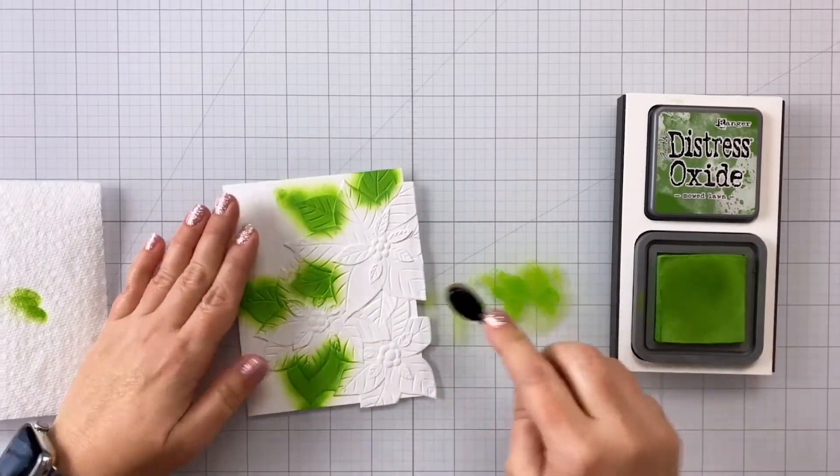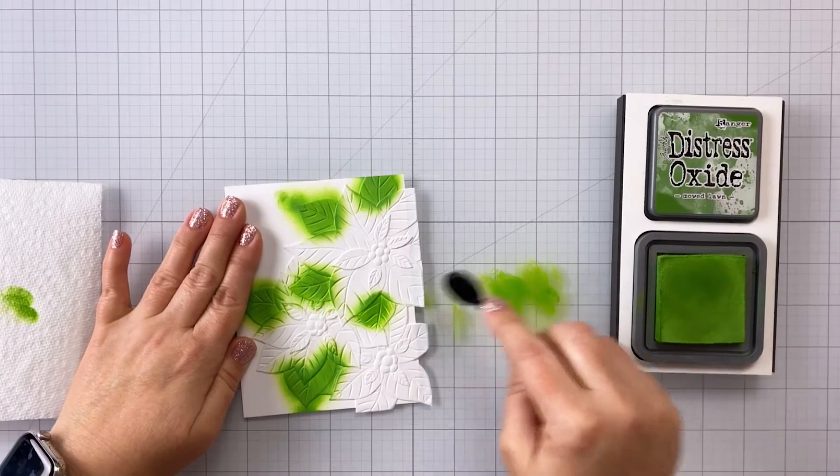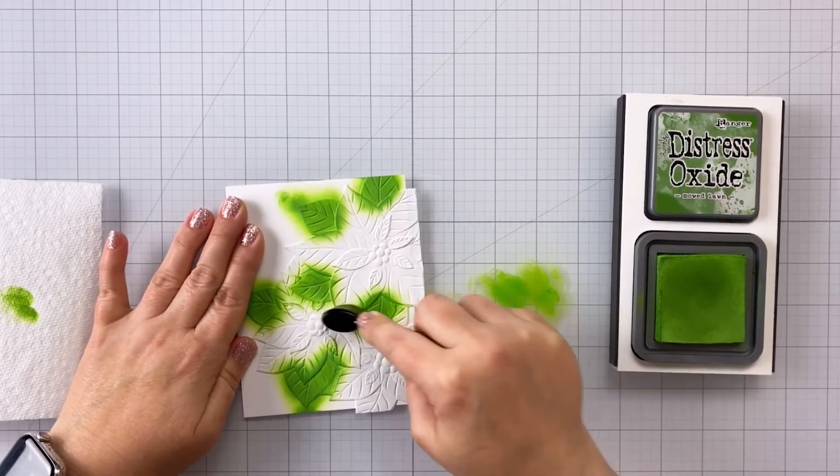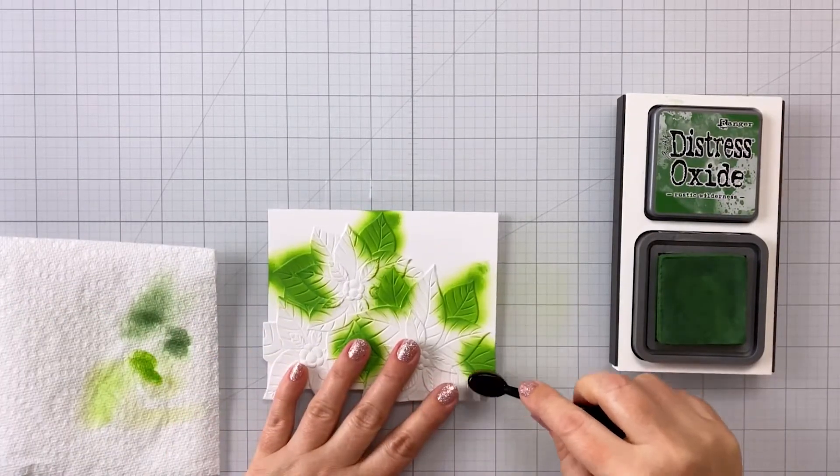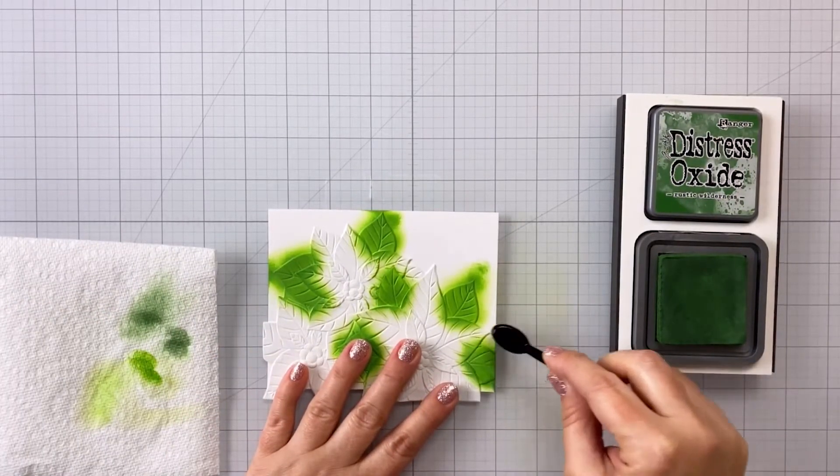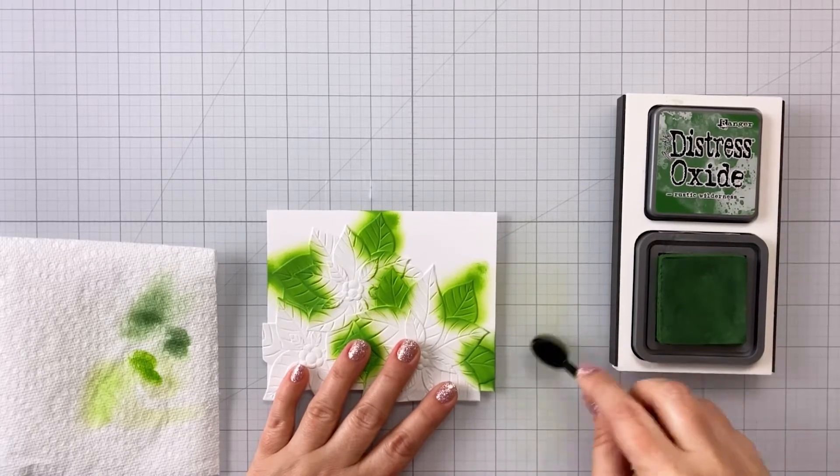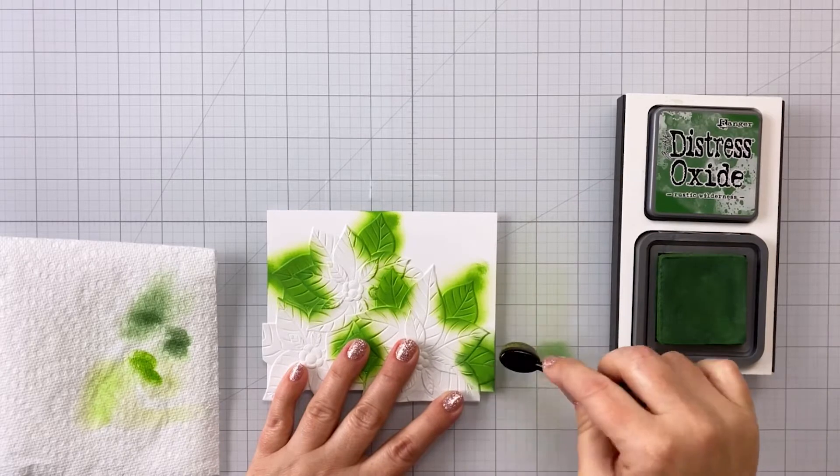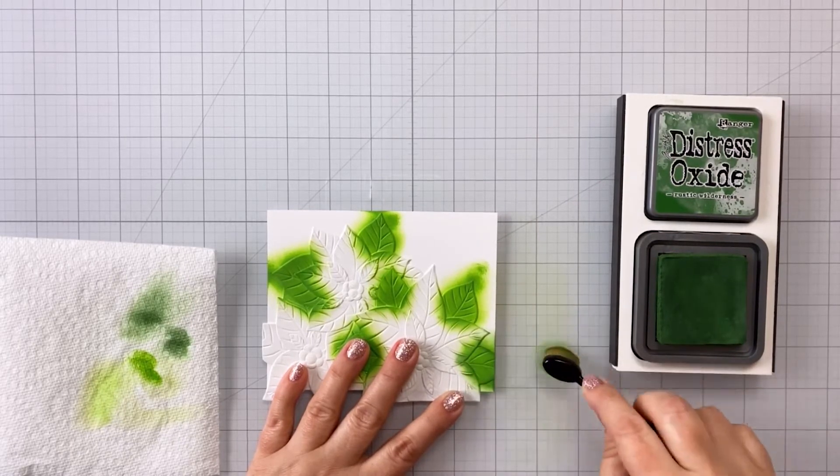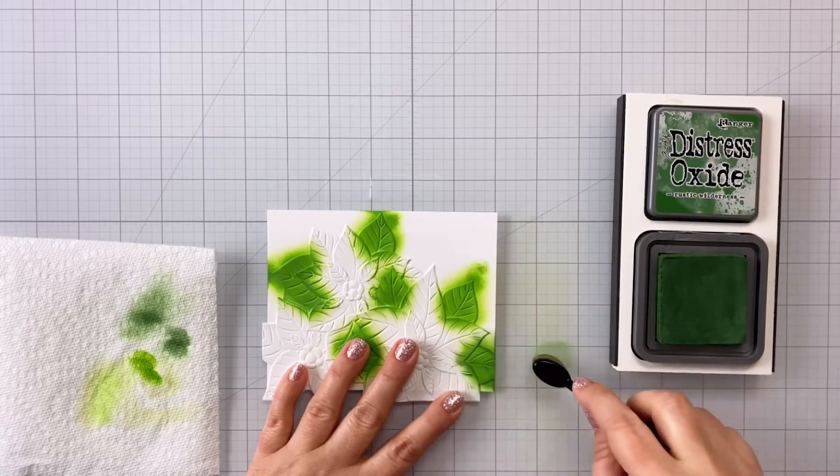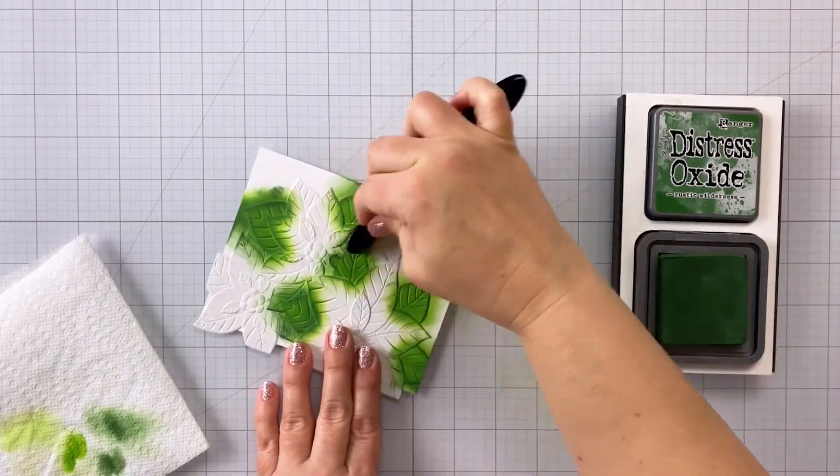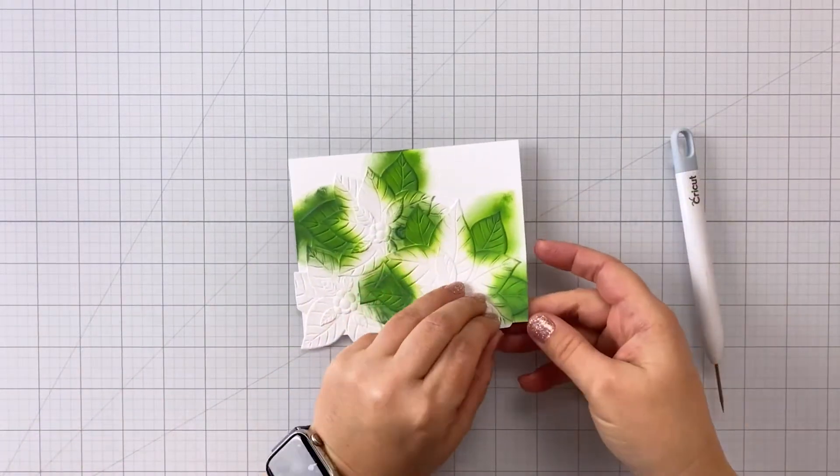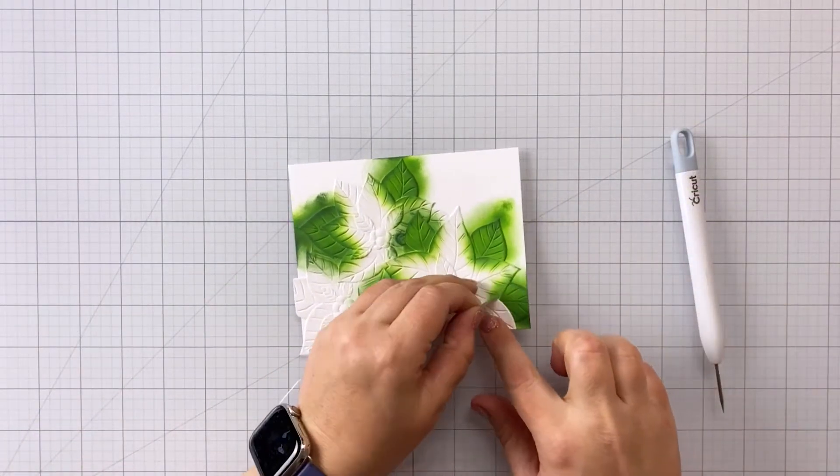So I went in with the mowed lawn and got all of the leaves. And then I'm going to come in with some rustic wilderness, and I'm going to add a little bit of shading here and there around the edges of the leaves. This is going to help to create even more dimension. It's not a necessary step. You're still going to get a beautiful card, even if you just use one color. But if you use two colors, a shade and then a darker shade for the shading, it does look really nice when it's done. I'm using a smaller detail brush, which makes this process a lot easier.